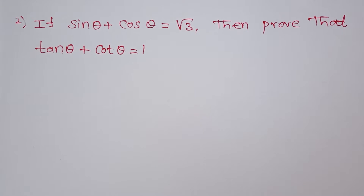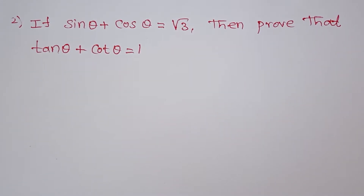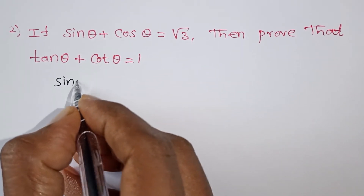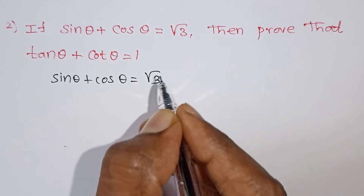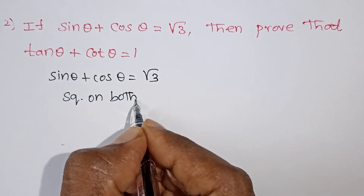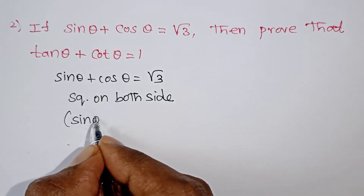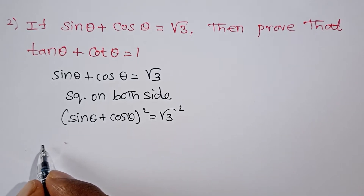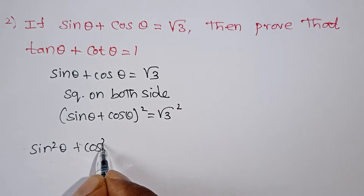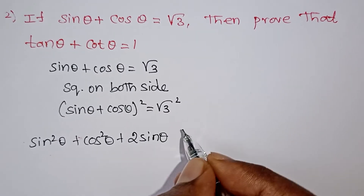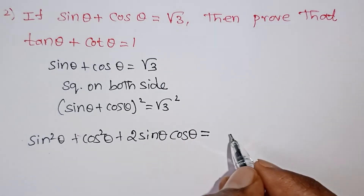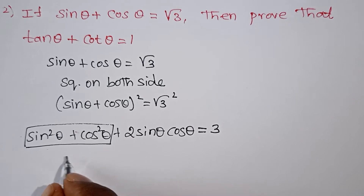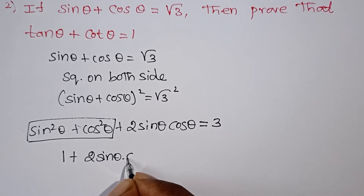Next question: if sin θ plus cos θ is equal to root 3, prove that tan θ plus cot θ is equal to 1. This uses the same method. Square both sides: sin θ plus cos θ, the whole square equals root 3 squared. Expanding using (a + b)²: sin²θ plus cos²θ plus 2 sin θ cos θ equals 3.